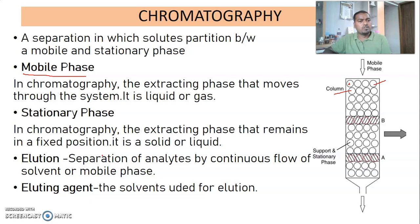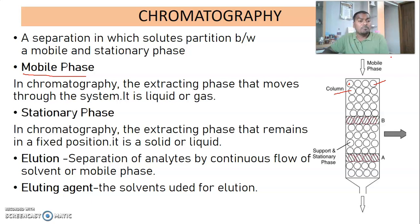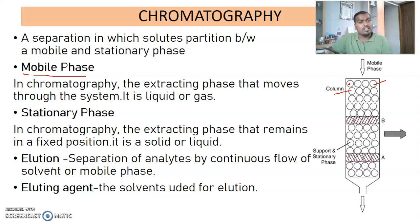Elution: we dissolve the sample in a mobile phase and pass it through the stationary phase. The sample is distributed between the mobile phase and stationary phase, and the analytes separate while moving. This process of separation of analytes by the continuous flow of solvent is called elution. For elution, we use a solvent called the eluting agent. Sometimes the mobile phase acts as the eluting agent, or we use a separate eluting agent, depending on the nature of the stationary phase and the sample.